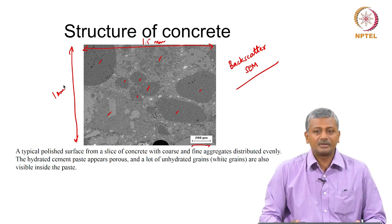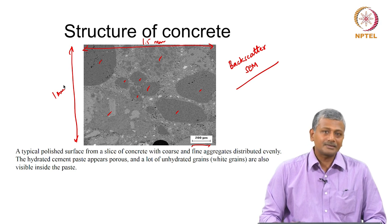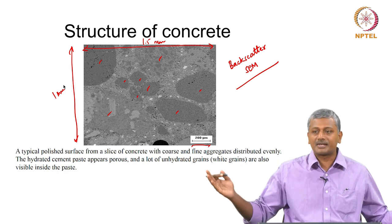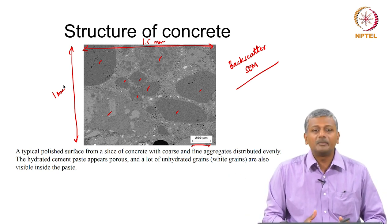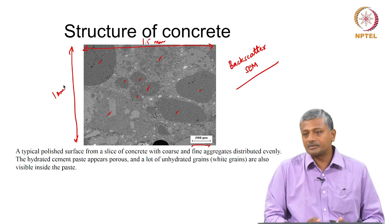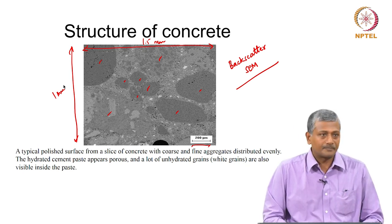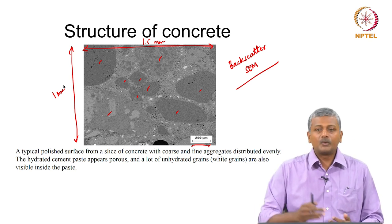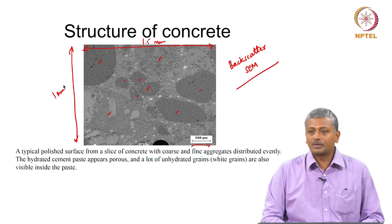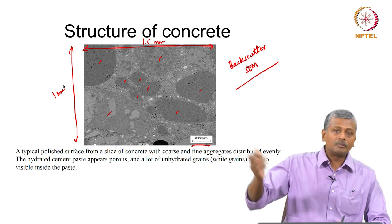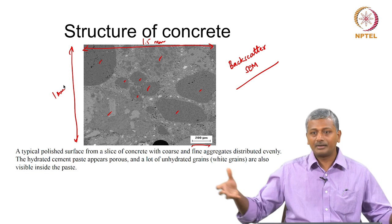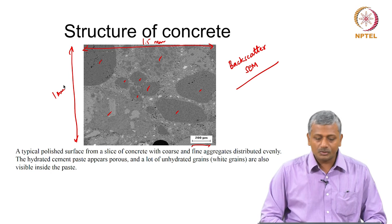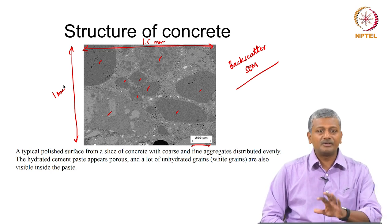As discussed in the introduction, we are looking at very small portions of this material, which is used at meter scales. We are examining sub-millimeter to millimeter scales to understand what is actually inside. The challenge is to go from this scale and explain the properties — like compressive strength measured in the lab or the performance of concrete in a large beam or column. The idea is to look at how the different phases are distributed.